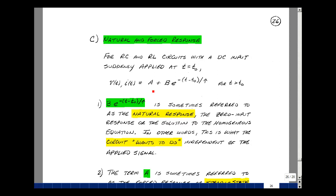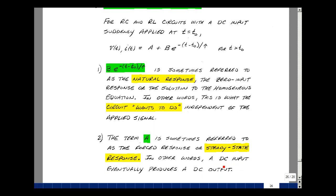The term A is sometimes referred to as the forced or steady state response. In other words, the DC input eventually produces a DC output. The two terms together for T minus T0 less than five time constants is usually referred to as the transient response.